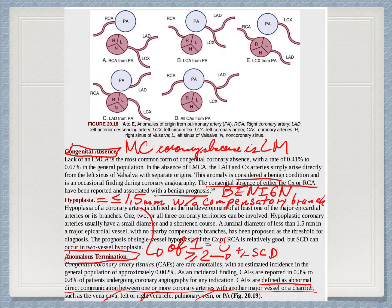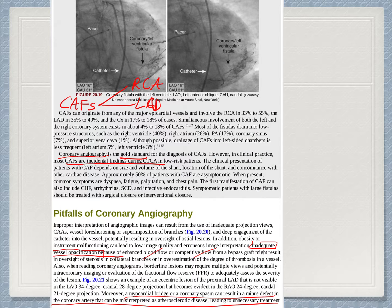Anomalous termination is defined as the abnormal direct communication between one or more coronary arteries with another major vessel or a chamber, such as the vena cava, left or right ventricle, pulmonary vein, or pulmonary artery. In figure 20.19, we can see coronary artery fistulas, which are more common in the right coronary artery and left anterior descending. Coronary angiography is the gold standard to detect them, and they are mostly found incidentally during CT coronary angiography.